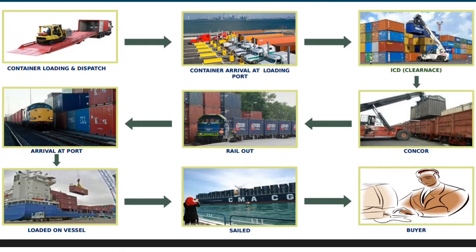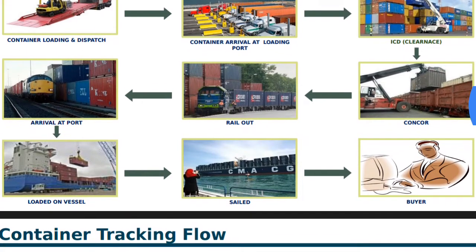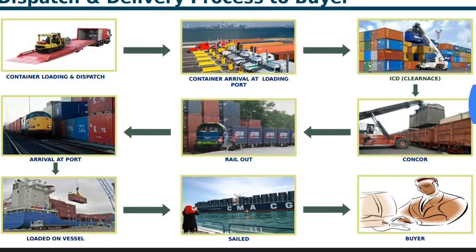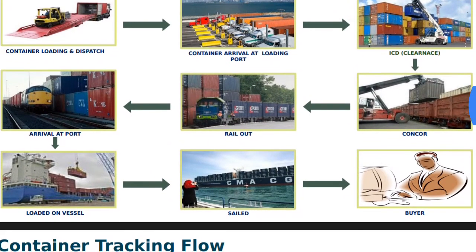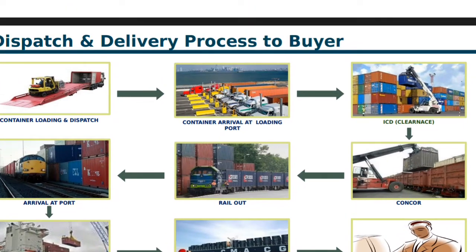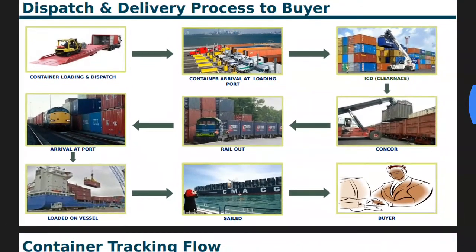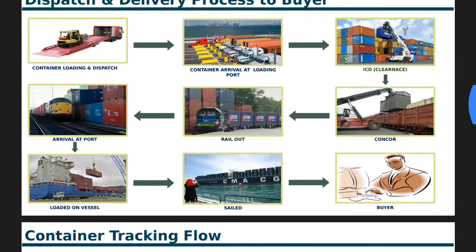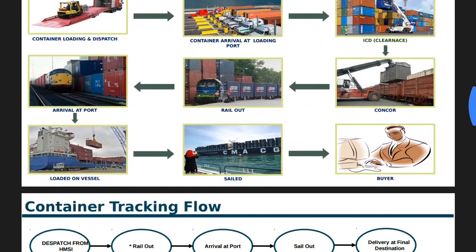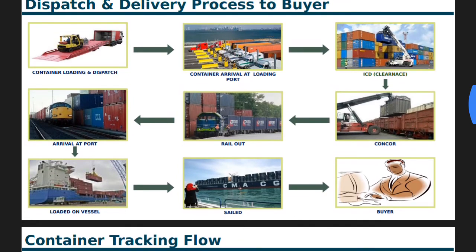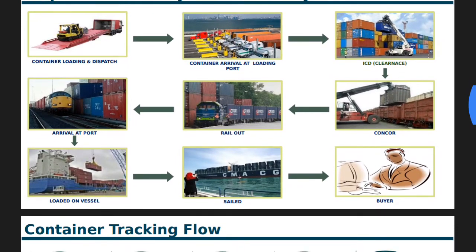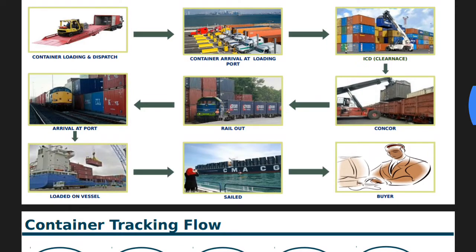We need to check transportation charges. Then certificate of origin charges — the freight forwarder goes to the chamber of commerce to certify the certificate of origin, so we need to check those charges. Then inland haulage charges, because after examination the shipment goes by train to the seaport. Also check fumigation charges if the shipment is going in a wooden box, as it needs to be fumigated. Finally, check bill of lading charges, which depend on the shipping line.